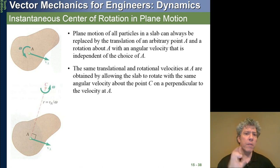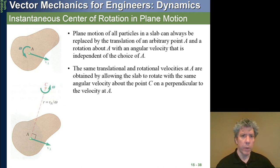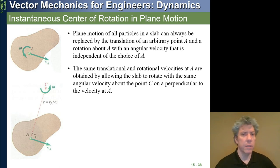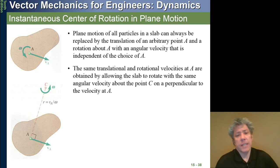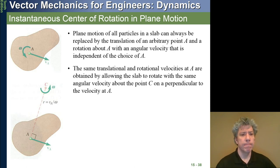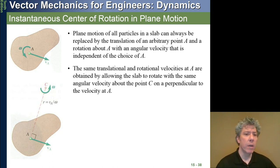Now they'll talk about instantaneous centers. Consider a general body - a point A is moving down and to the right with some velocity VA, but the whole body is rotating as well. To locate the point where the body appears to rotate about at this instance: the instant center has to lie on a line through A that is perpendicular to VA. If you choose a point far enough away from A along that line, you'll find a point on the body that has no velocity - that's the instant center.